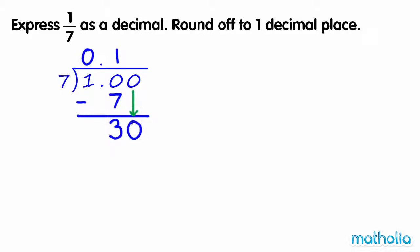Thirty hundredths divide seven equals four hundredths. Thirty hundredths subtract twenty eight hundredths equals two hundredths. We now have a digit in the hundredths place. The digit in the hundredths place is four.